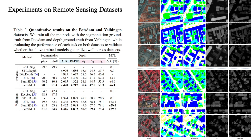To demonstrate the effectiveness of the proposed method, we carry out experiments on several publicly available datasets for scene understanding, including remote sensing datasets and street view datasets. In the remote sensing scenario, the POTSDAM and VAIHINGEN datasets provide the segmentation and depth ground truth, respectively. Experimental results indicate that our proposed method performs better than single task learning, joint task learning, as well as domain adaptation methods.